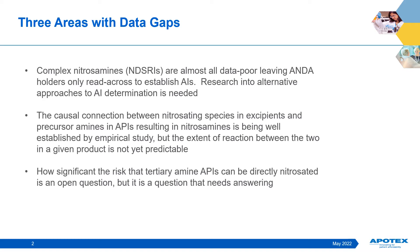I will share with you three areas of investigation that are worthy of sponsorship and could fruitfully inform policy on nitrosamines control. First, complex nitrosamines are almost all data-poor species when it comes to carcinogenicity studies. Without such studies on these substances, ANDA holders are left with little in the way of tools to establish acceptable intakes and have to rely on the read-across approach. Research into alternative approaches to AI determination for data-poor nitrosamines is needed.